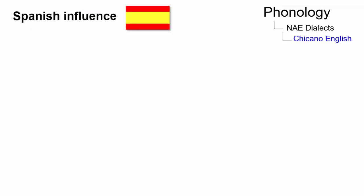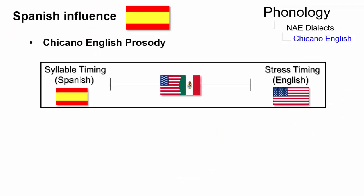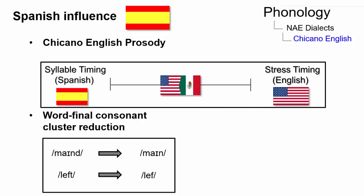Chicano English has many phonological features that demonstrate the Spanish influence. For example, prosody is an intermediate between Spanish syllable timing and English stress timing. Furthermore, Chicano English exhibits word-final consonant cluster reduction, so that 'mind' is pronounced as 'mine,' or 'left' as 'lef.'